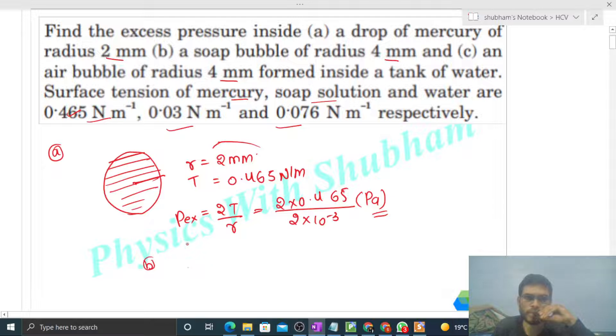So here we have a soap bubble, something like this. And this soap bubble—its thickness is very small. Like this, there's a soap bubble and its radius is given as 4 mm, and surface tension of this soap solution is also given, that is 0.03 Newton per meter.